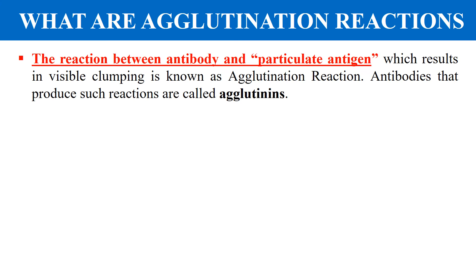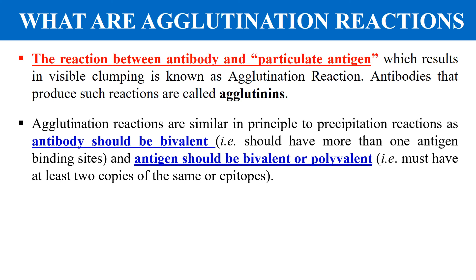The second type of reaction is agglutination reactions. These are reactions between an antibody and a particulate or solid antigen. Unlike precipitation reactions — where the antigen is liquid or soluble — in agglutination reactions the antigen must be particulate or solid in nature. The reaction between antibody and solid antigen results in visible clumping, and the antibodies which produce such reactions are called agglutinins. The same bivalency condition applies: the antibody must be bivalent and the antigen bivalent or polyvalent.